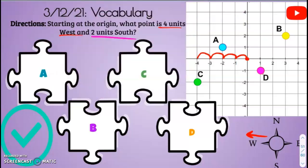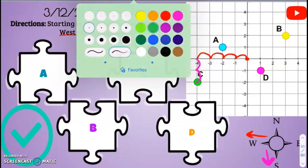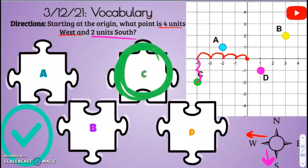Two units south. South is down. One, two. What point are we at? We are at letter C. So go ahead and drag that check mark to that letter C. And that's it for our vocab. Great job!